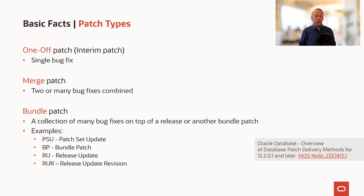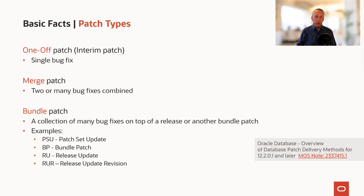The most simple patch is a one-off patch and it contains only one bug fix. You could also get a merge patch which contains two or more bug fixes, and this could be the case if your specific bug fix is dependent on another bug fix. Then we can ship those two in a merge patch.